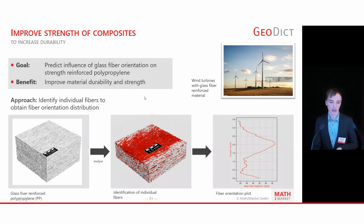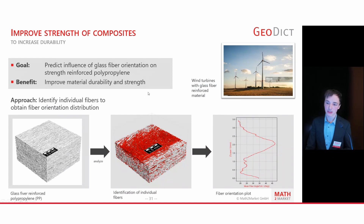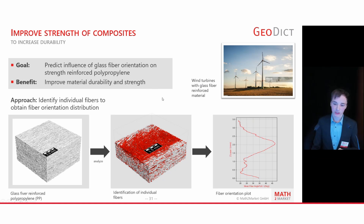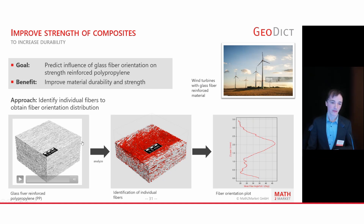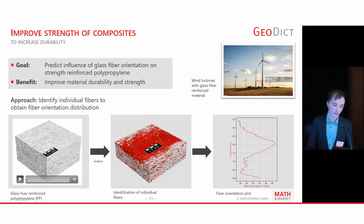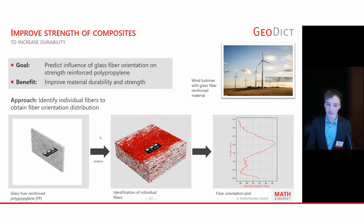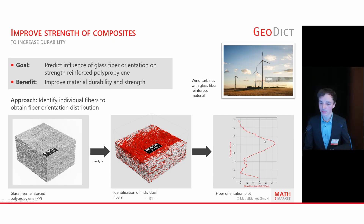There is also an example for wind turbines, where glass fibers are used to reinforce the material. The orientation of individual fibers is key to increasing durability. If you just look at the glass fiber material from the outside, you would not be able to differentiate the orientation of individual fibers. But by running an analysis in GeoDict, you can identify individual fibers and plot their orientation, which dictates the durability of that material.